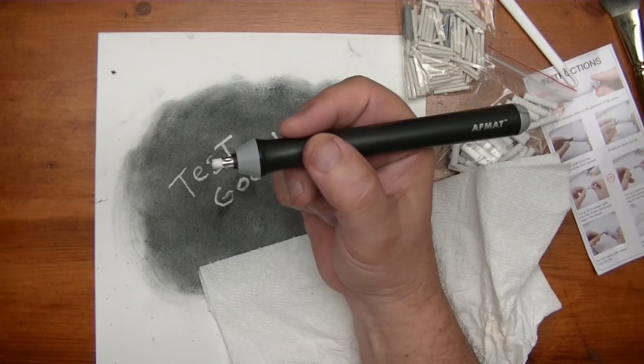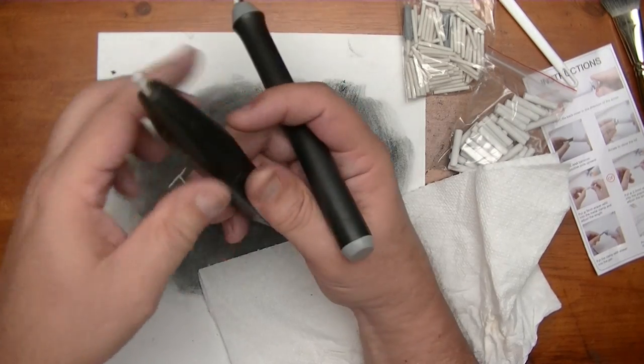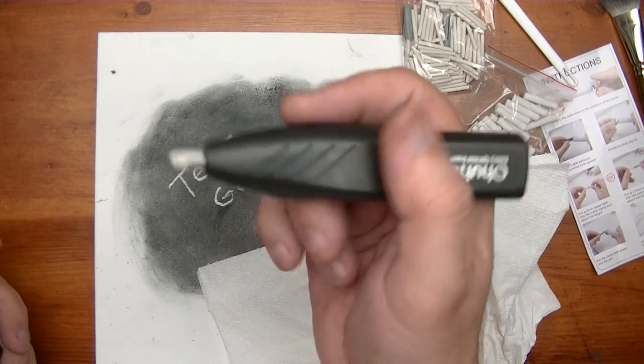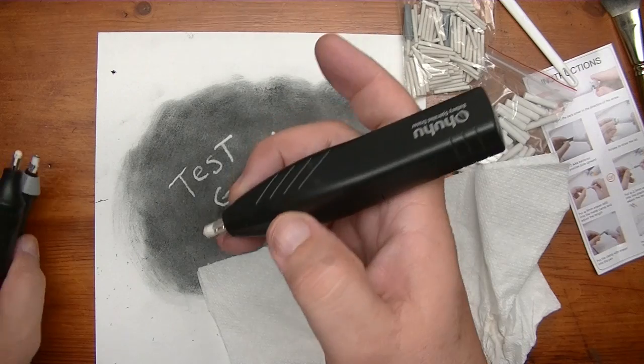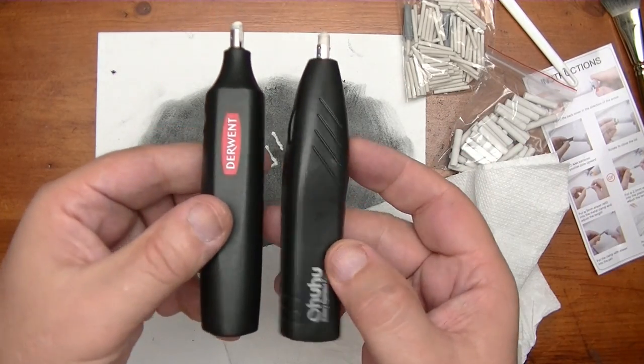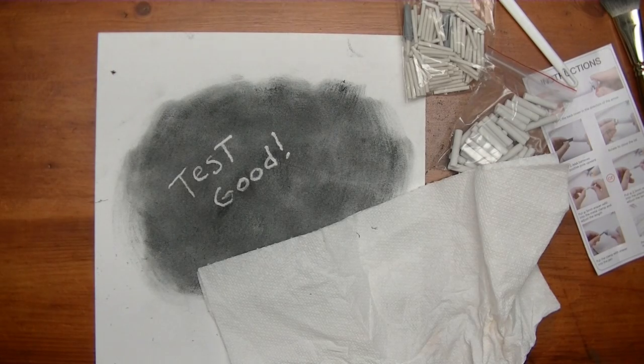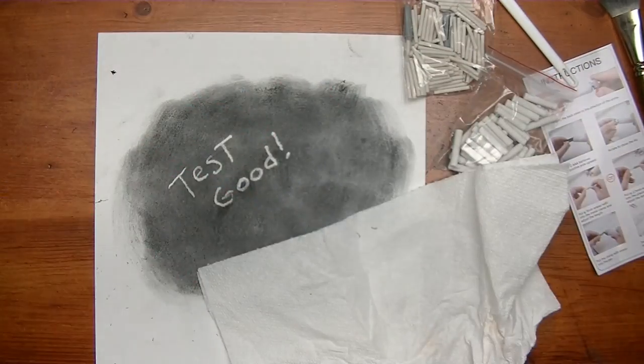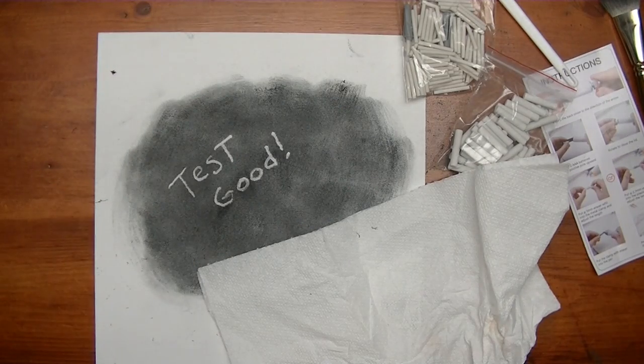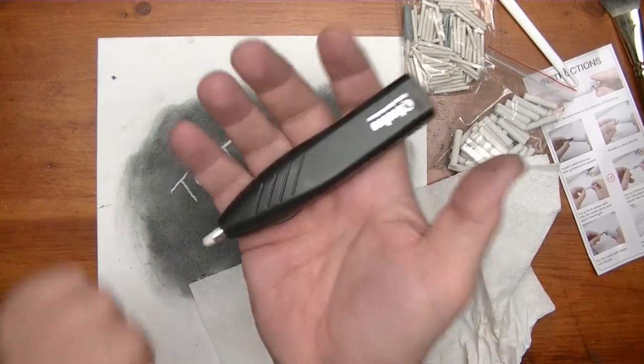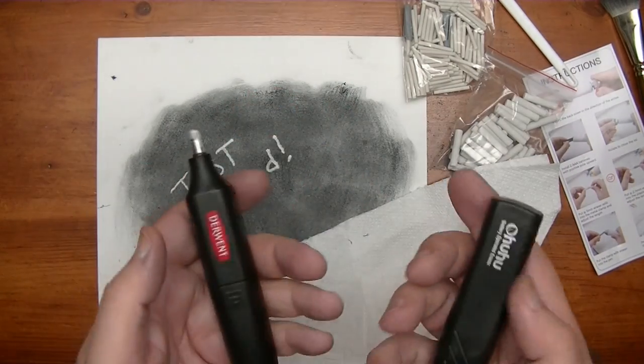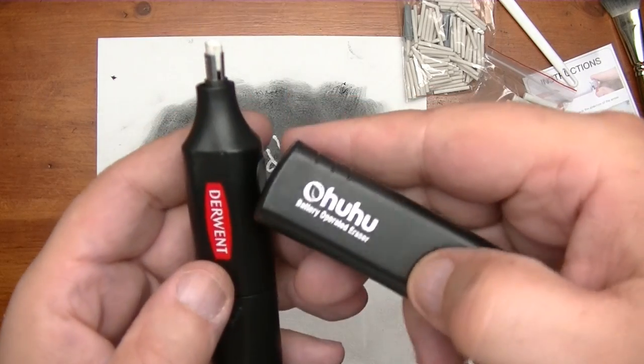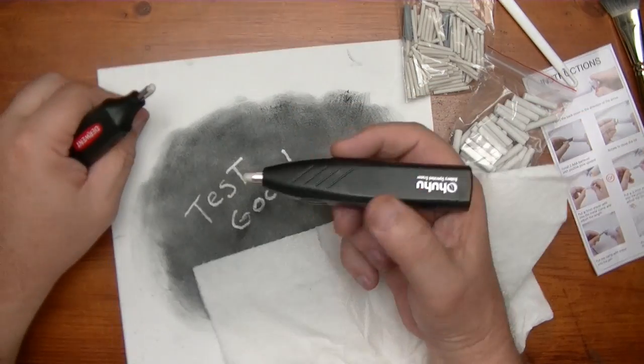Well there you go, it tests good. Now this one here compared to the two that I've tested before, you can see that it's a whole different shape. This here is shaped like most battery operated erasers. Notice they are similar, and here's one that I'm going to be reviewing pretty soon, Jakar. The Derwent is not as heavy as the Ohuhu.